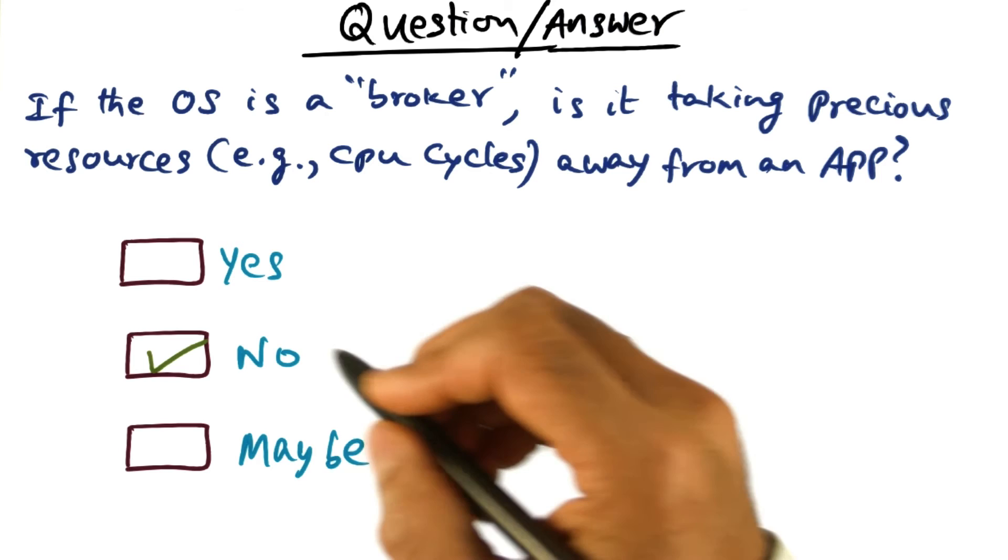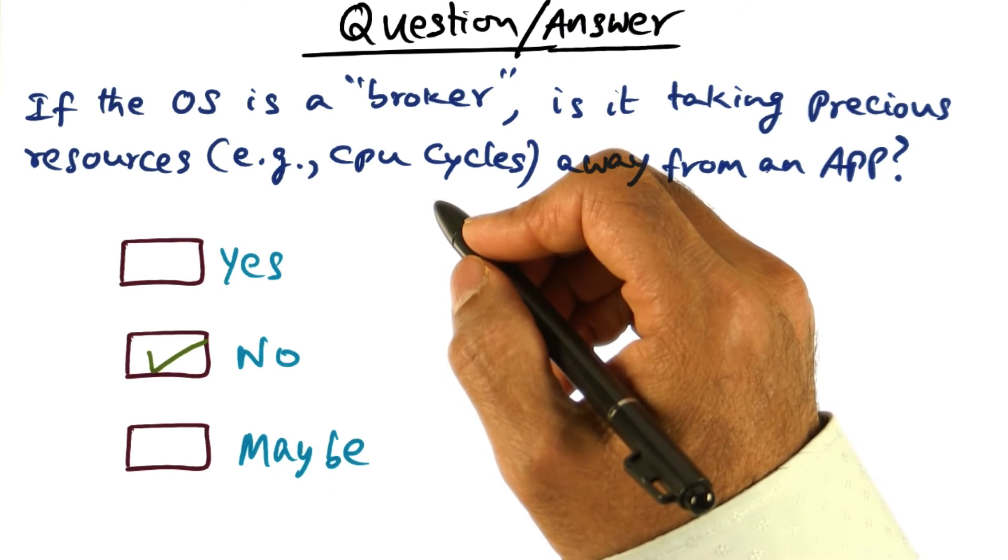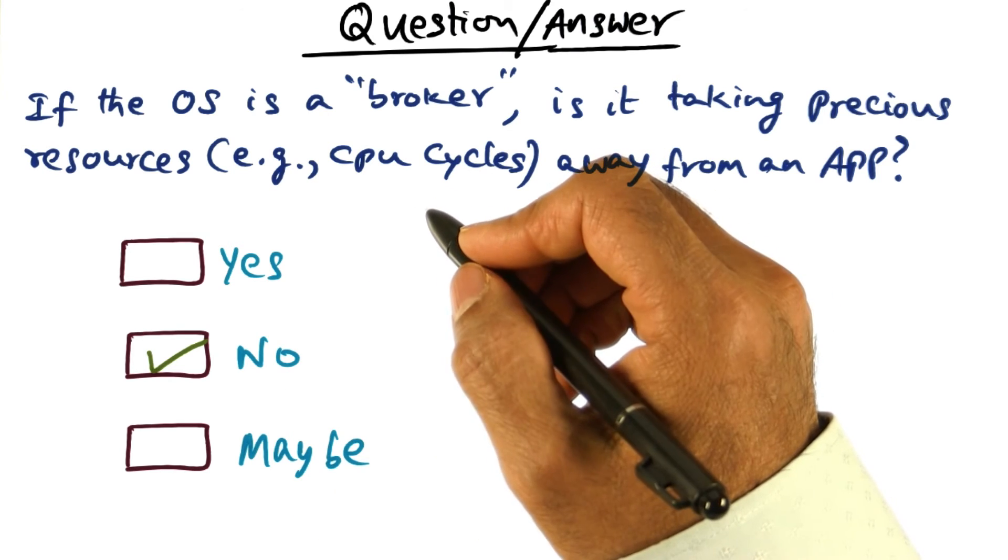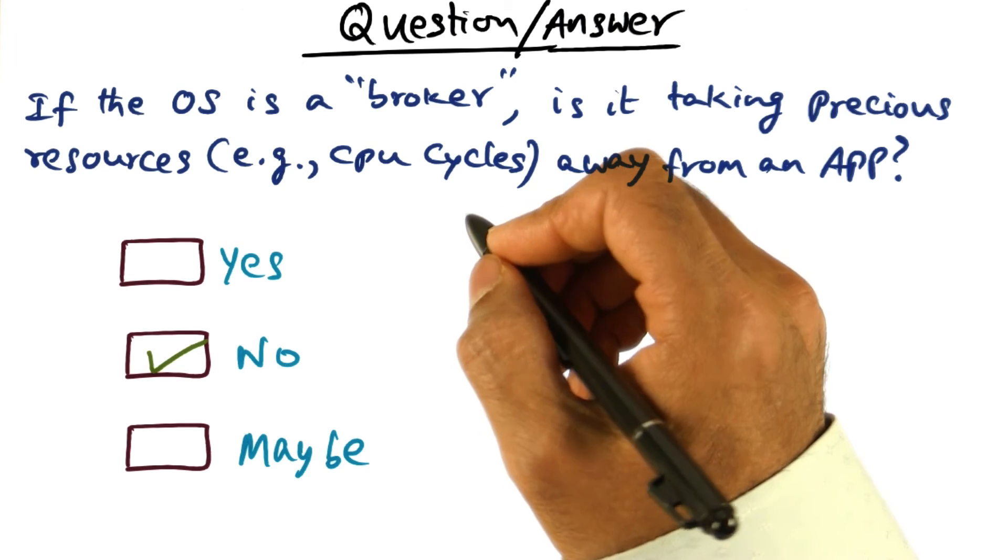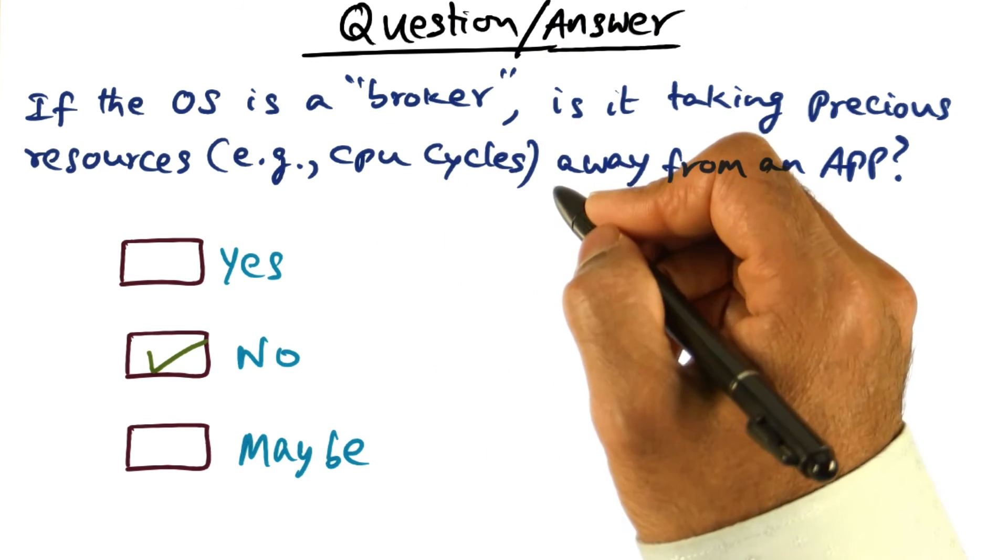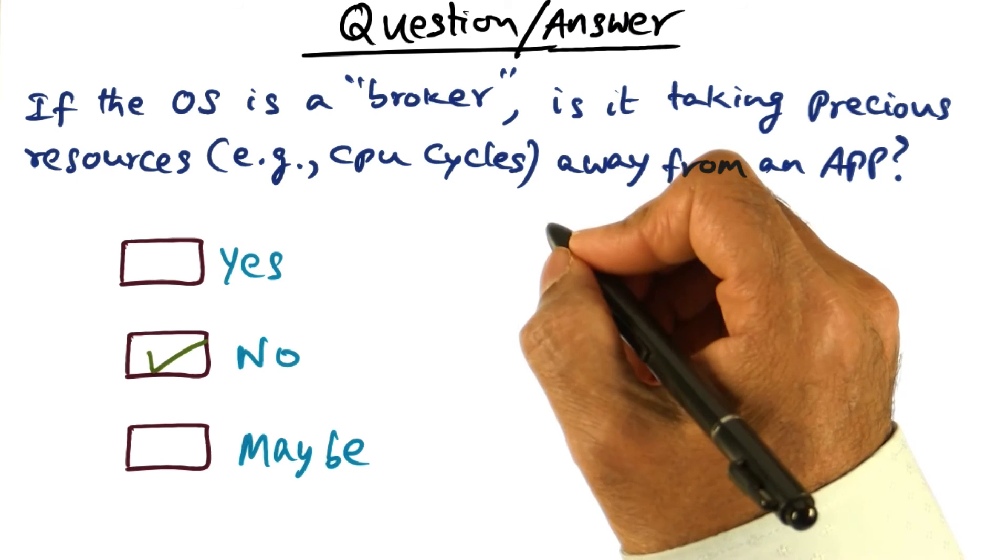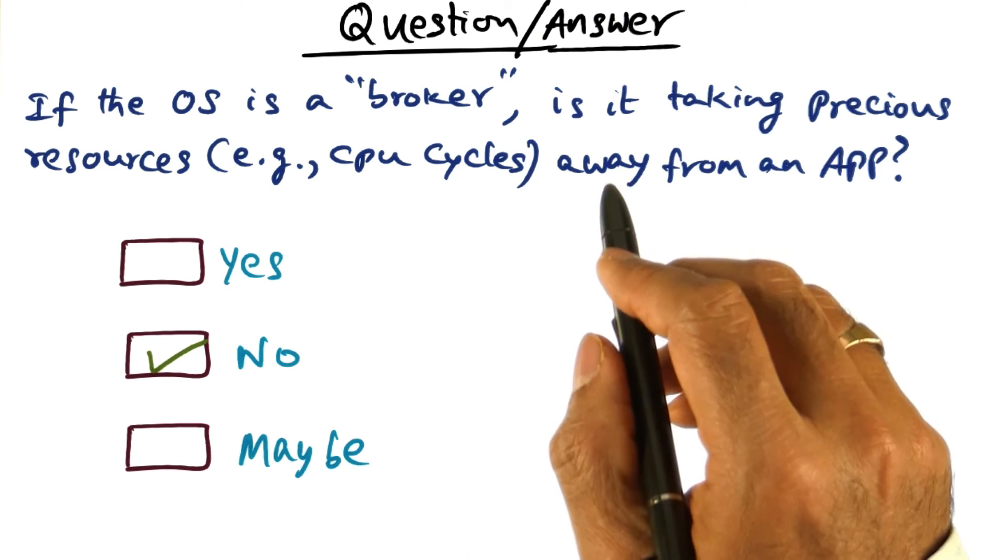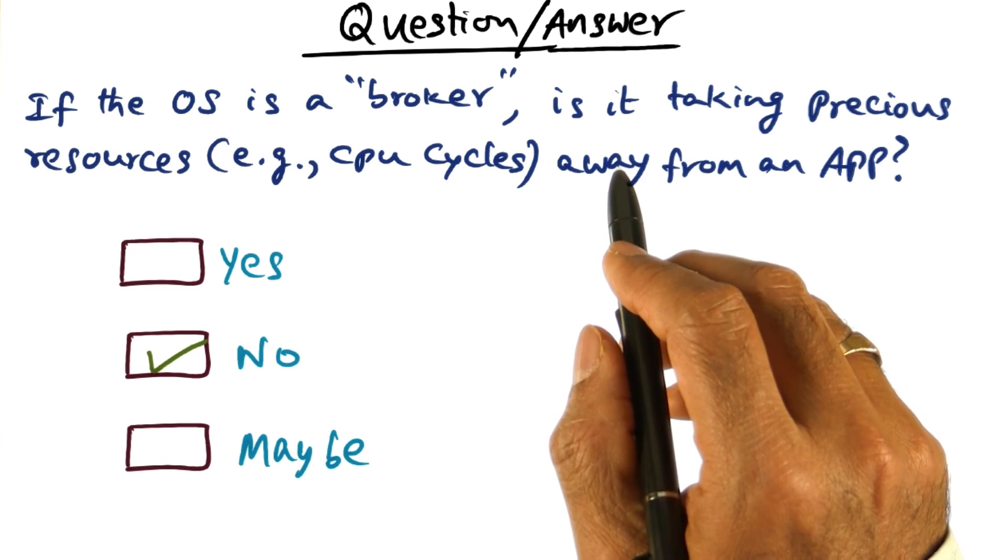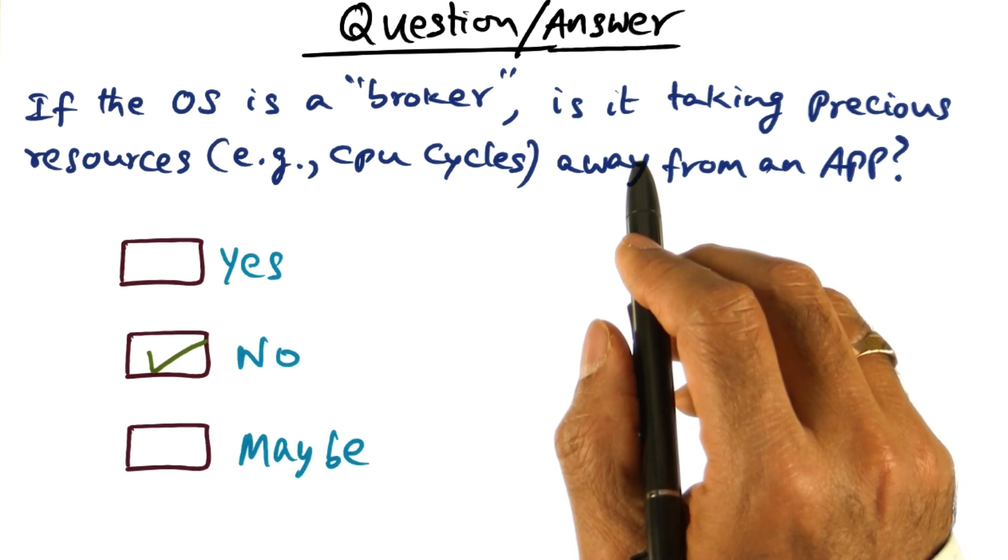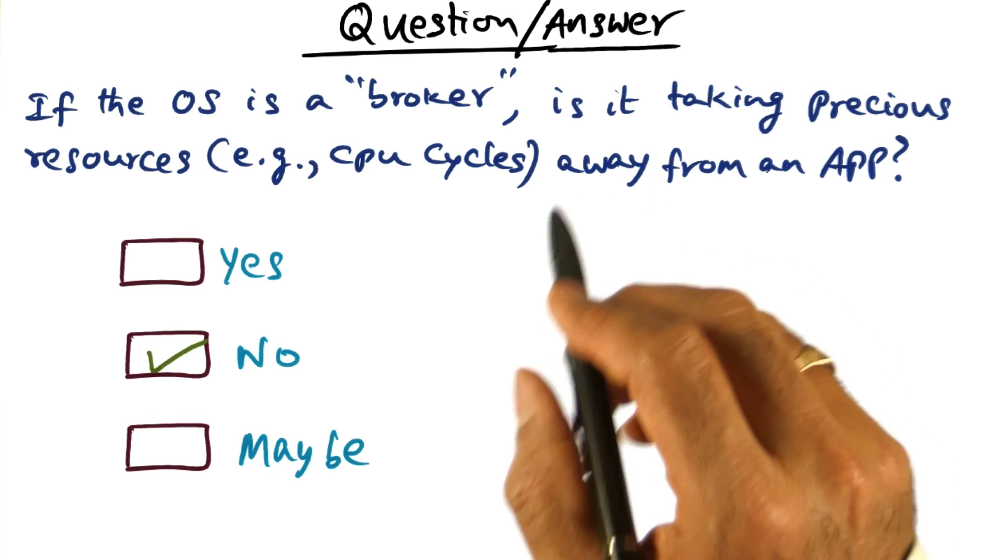Most of the time, the resources—CPU, memory, and so on—are being used for running the applications. The operating system gets in the way as a broker only for arbitrating and providing the resources needed by an application safely and securely, and then gets out of the way as quickly as possible.